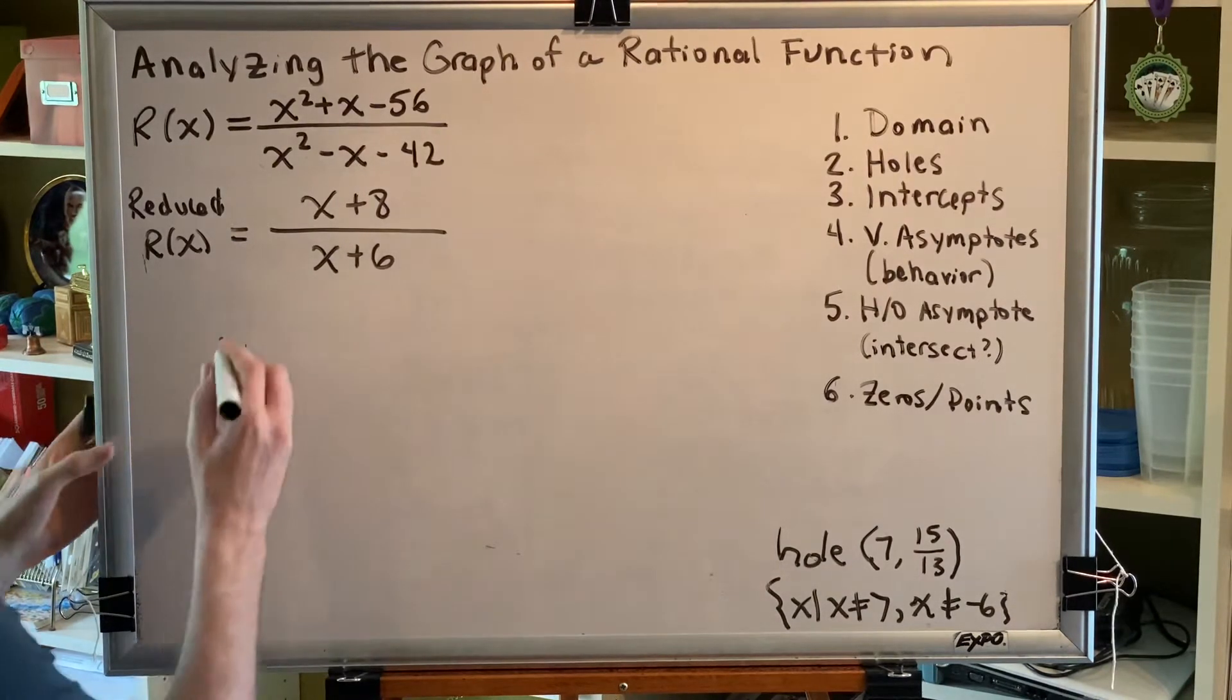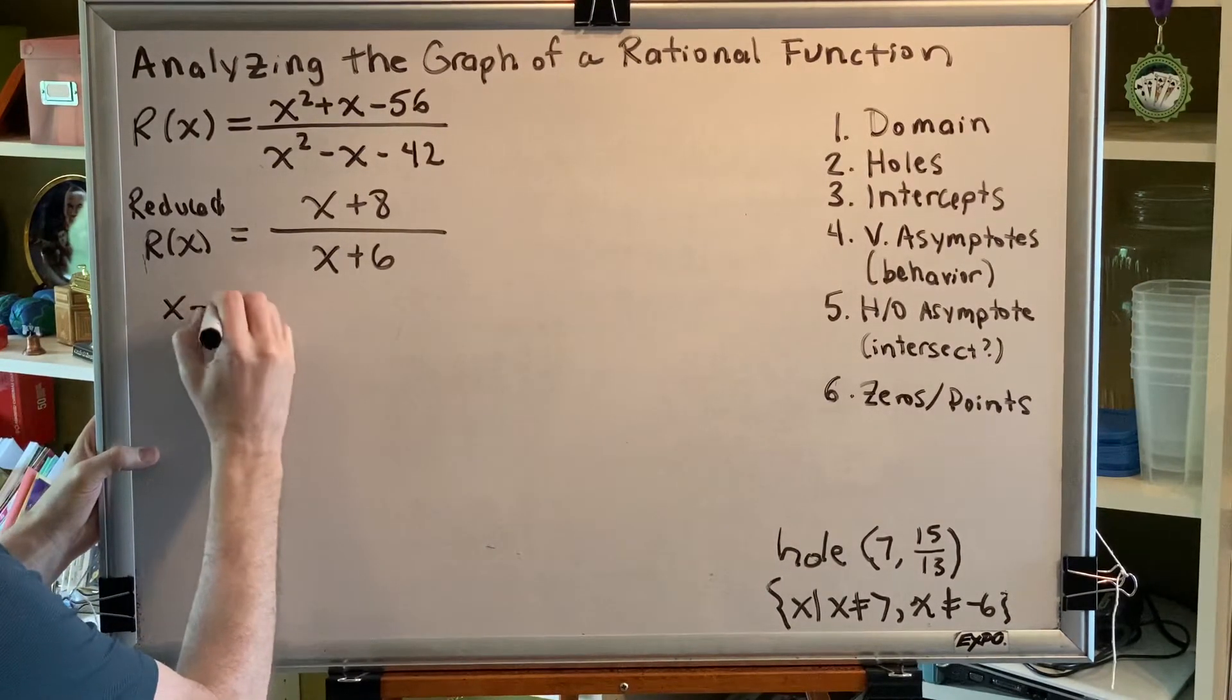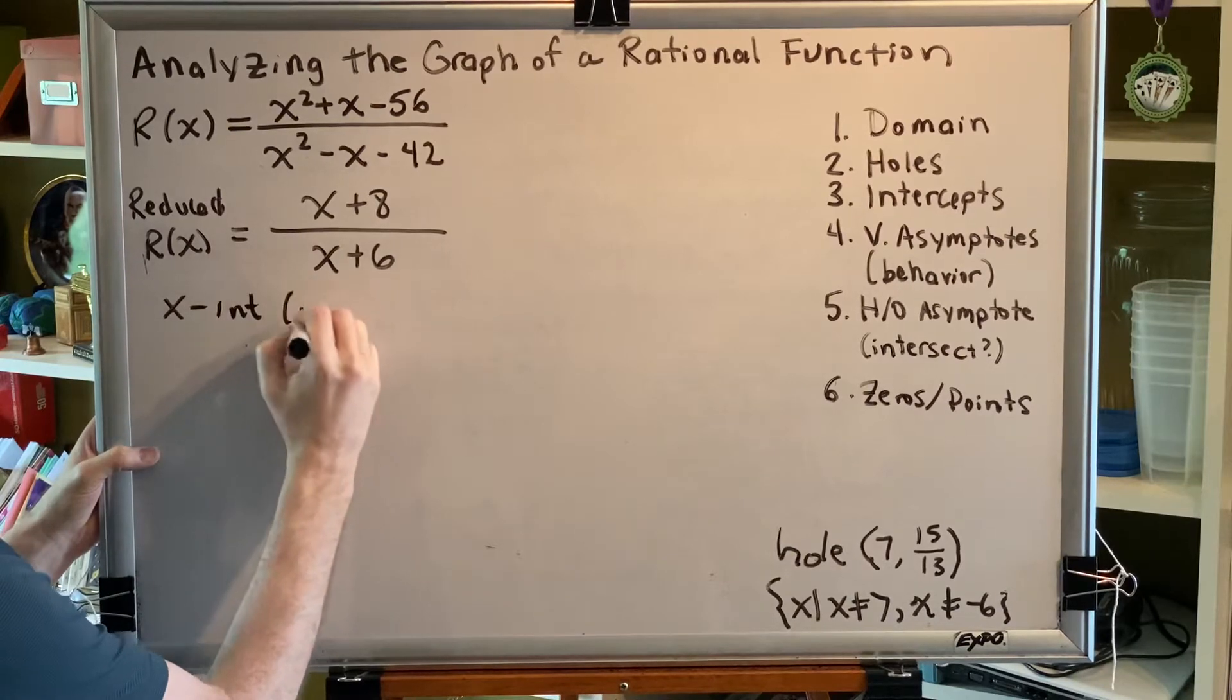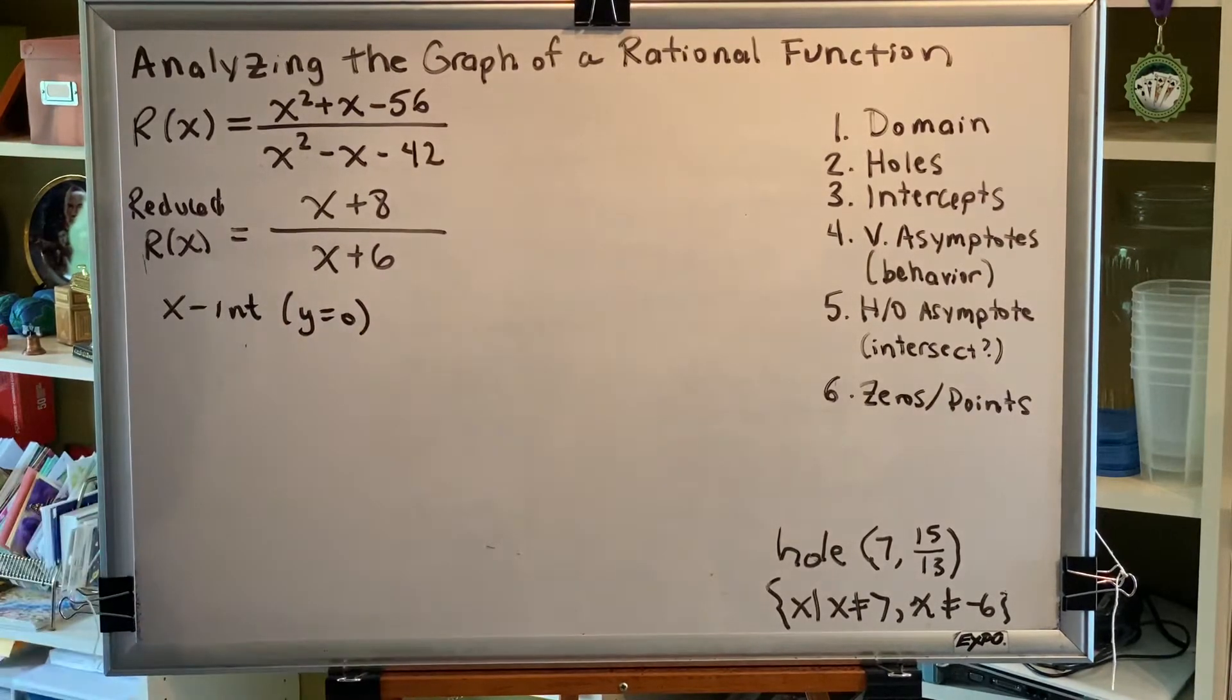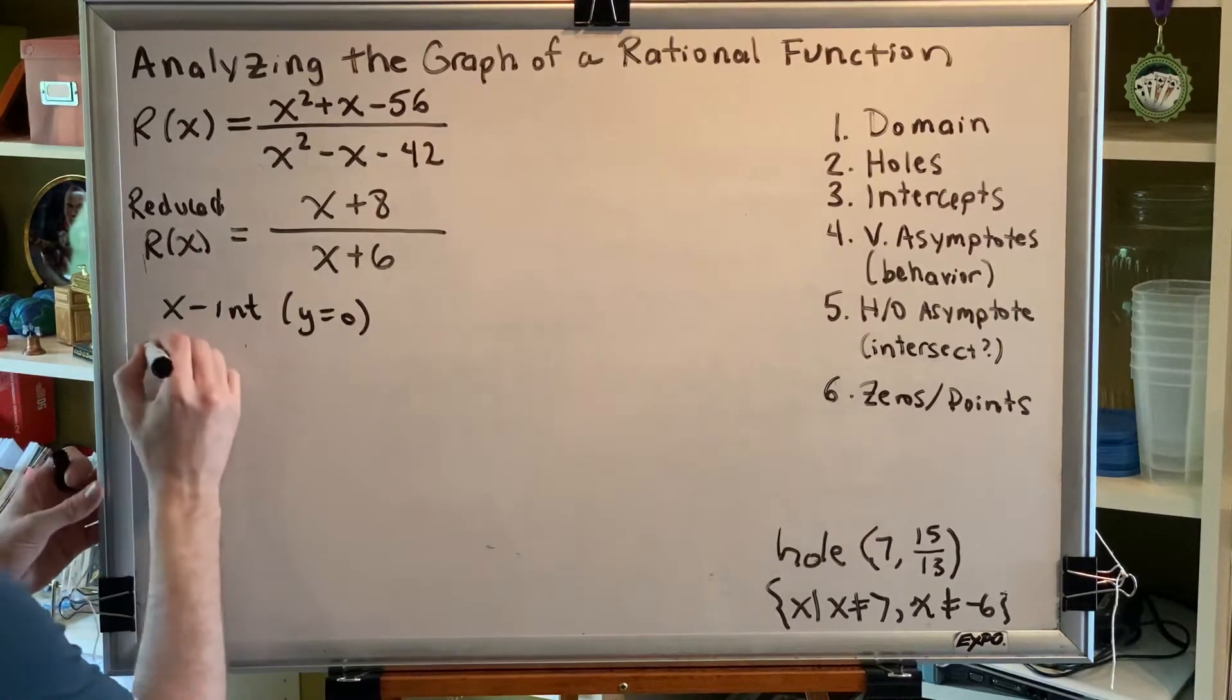Intercepts come in two flavors, x and y. The interesting thing about an x-intercept is that y equals 0, and the interesting thing about a y-intercept is that x equals 0. So let's look for these intercepts using those properties.